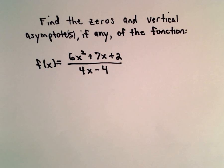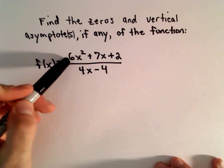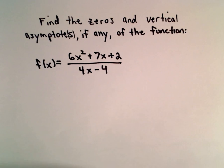So, to find the zeros and to find the vertical asymptotes, the first thing I do for a rational function is I just start factoring. I factor the numerator, I factor the denominator.